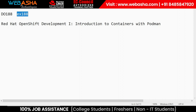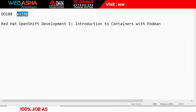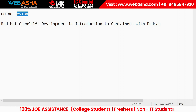We will discuss about students building, running, and managing containers with Podman and the Red Hat OpenShift Container Platform. This course is basically for developers so they can manage container-based applications through hands-on labs. The DO188 course is based on RHEL 8.6 version and OpenShift Container Platform 4.10.